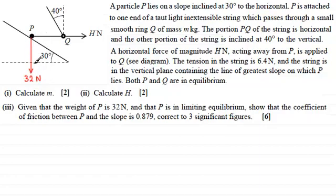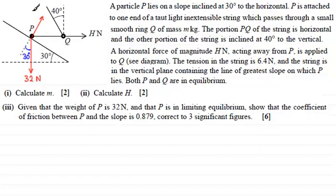When you have a weight and problems on planes, it's a good idea to put in some dotted lines — a dotted line perpendicular to the plane. This angle is always the same as the angle of the plane, so I'll mark that as 30 degrees. Because P is resting on a surface, there's going to be a normal contact force — the reaction. I'll mark that as R newtons.